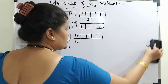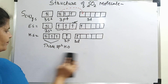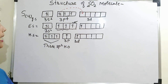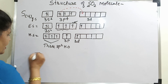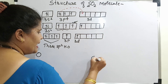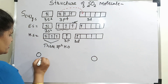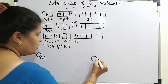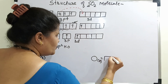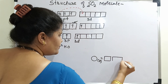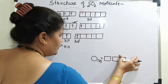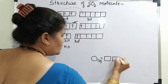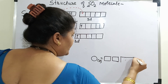Now let us go to the oxygen electronic configuration. As there are 2 oxygen atoms, I am writing the first oxygen on one side and the second oxygen on the other side to make you understand. The electronic configuration for oxygen is 1s2, 2s2, and 2p.